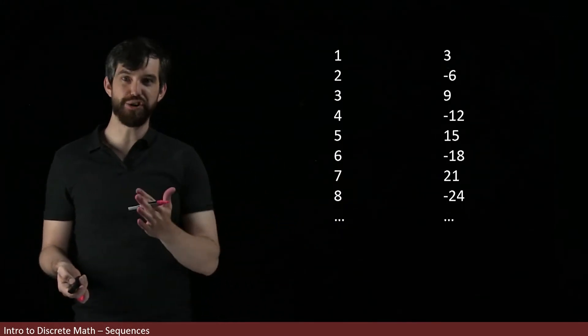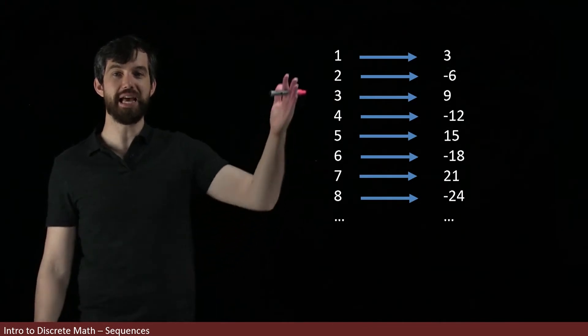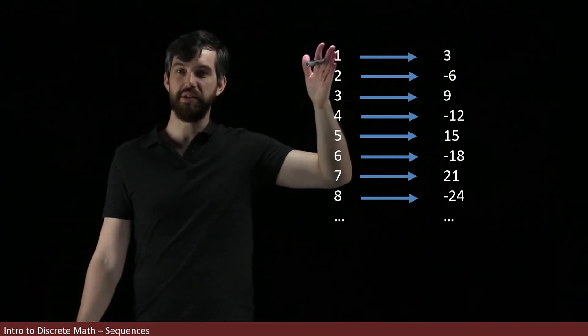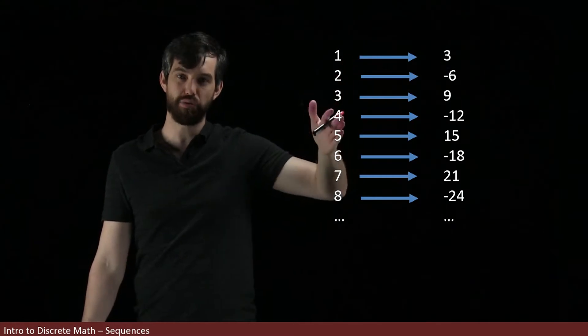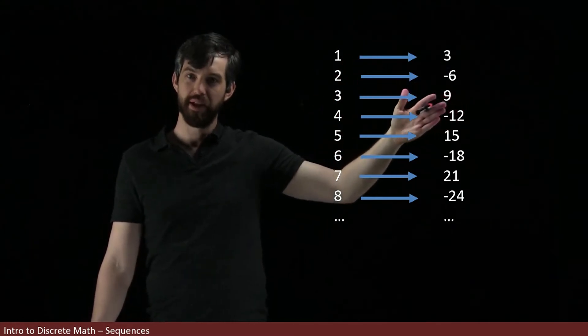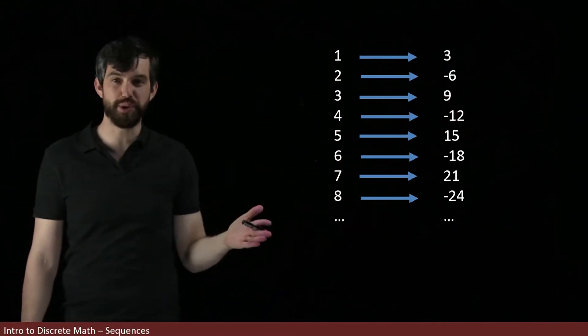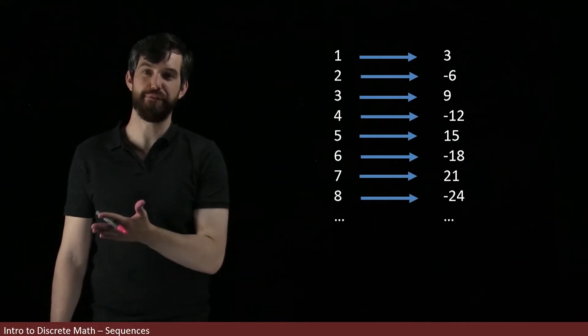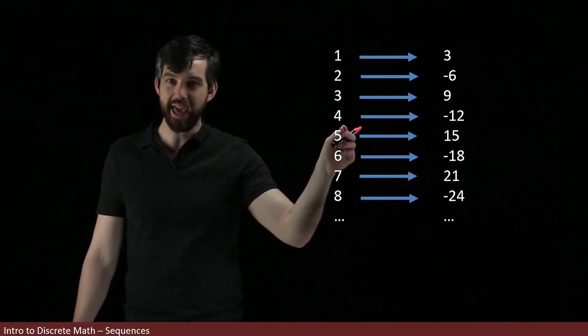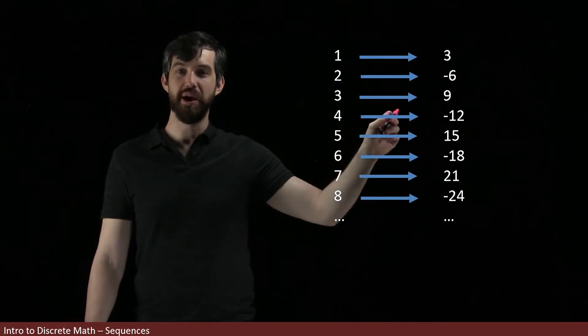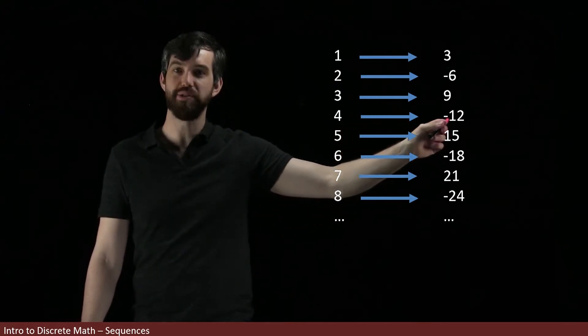And I can think of this in a dynamic way. I can think of it as the 1 goes to the 3 and the 2 goes to the -6 and the 3 goes to the 9. Indeed, the association here is precisely what that explicit formula tells me. If I choose a different k, it goes to the (-1)^k times 3k.